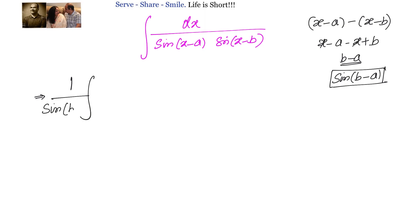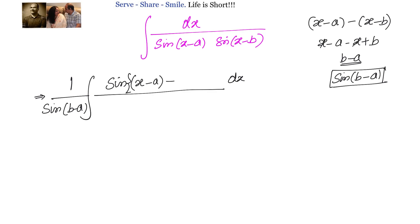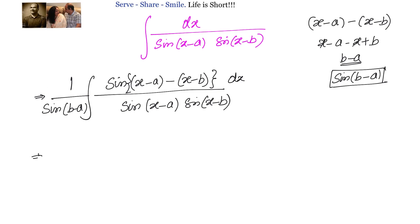We write down 1 divided by sin(b-a), and in the numerator we write sin of (x-a) minus (x-b), so that we can apply the sin(A-B) formula. In the denominator we keep it as sin(x-a) times sin(x-b).